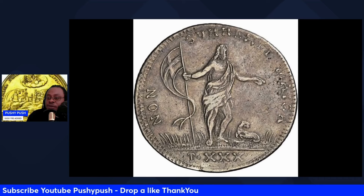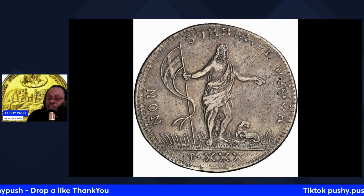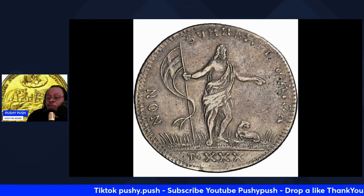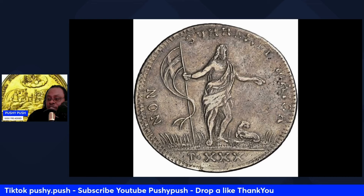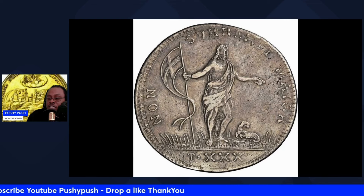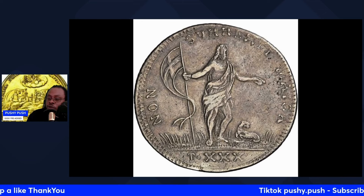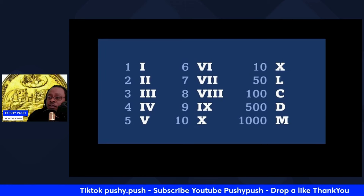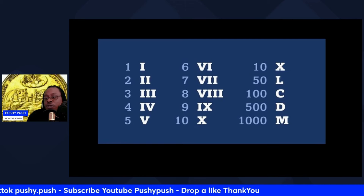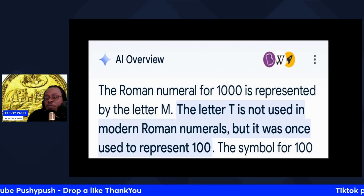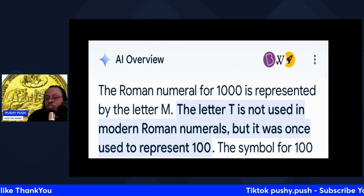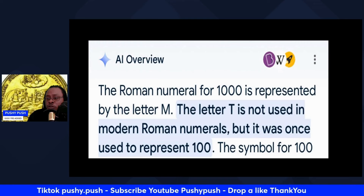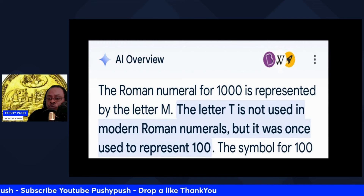This picture is pretty crazy right here. You can see the staff on his hand and the flag turning into a snake tongue. But down below, I was wondering: was this a date? It says T-X-X-X. I know the X's are 10, so that's 30. And I didn't know what the T was, so I went to the Roman numerals — and there is no T there. When you look it up, it says the Roman numeral for 1,000 is represented by the letter M, and the letter T is not used in modern Roman numerals, but it was once used to represent 100.